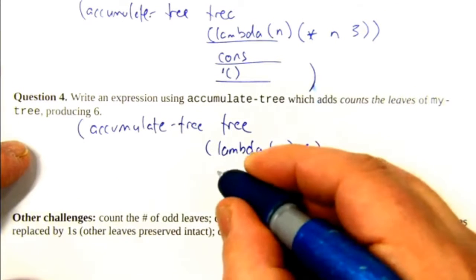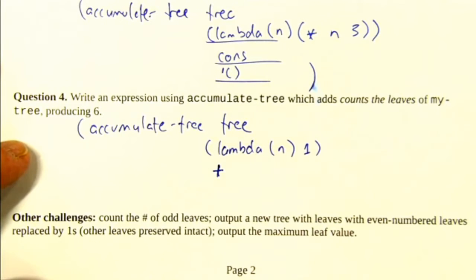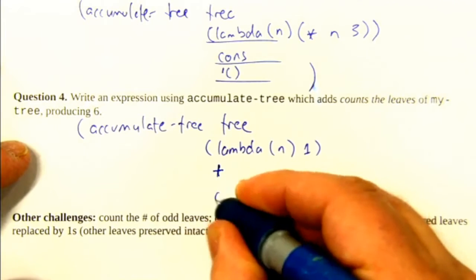And then our combining function is plus. So we're going to be transforming all the leaves into a 1 and adding them up. And then the base case is 0.